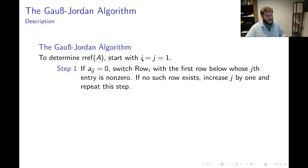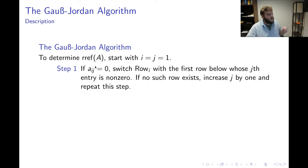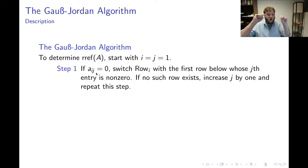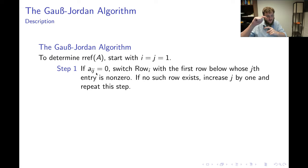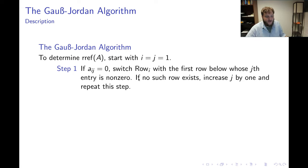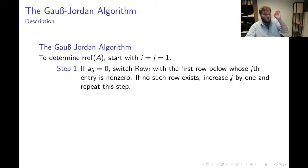Step 1: if the position currently focused on is equal to 0, switch that row with the first row below it where that column has a non-zero number. If it's not possible to do this, increase j by 1 and repeat — meaning jump to the next column and go back to step 1. When step 1 is done, I'll be focused on some position that is not equal to 0.